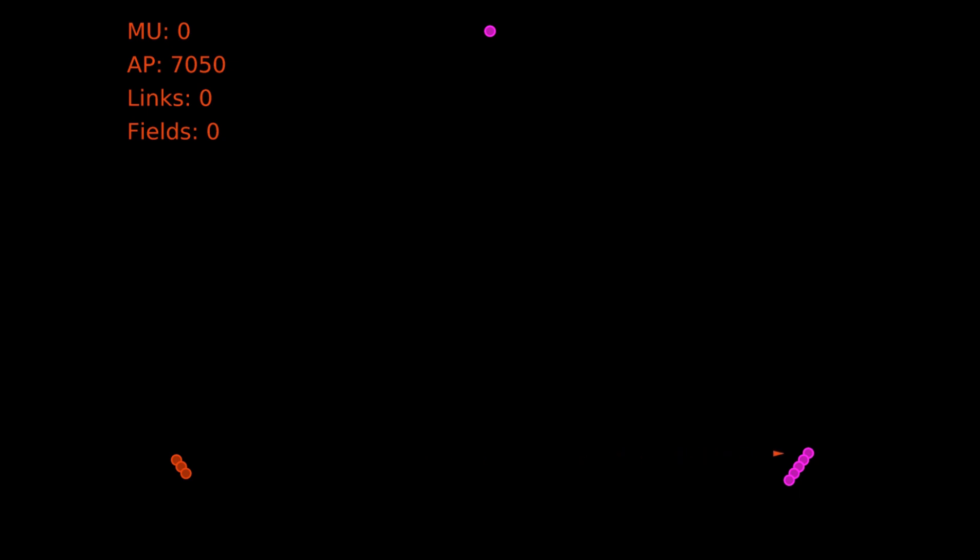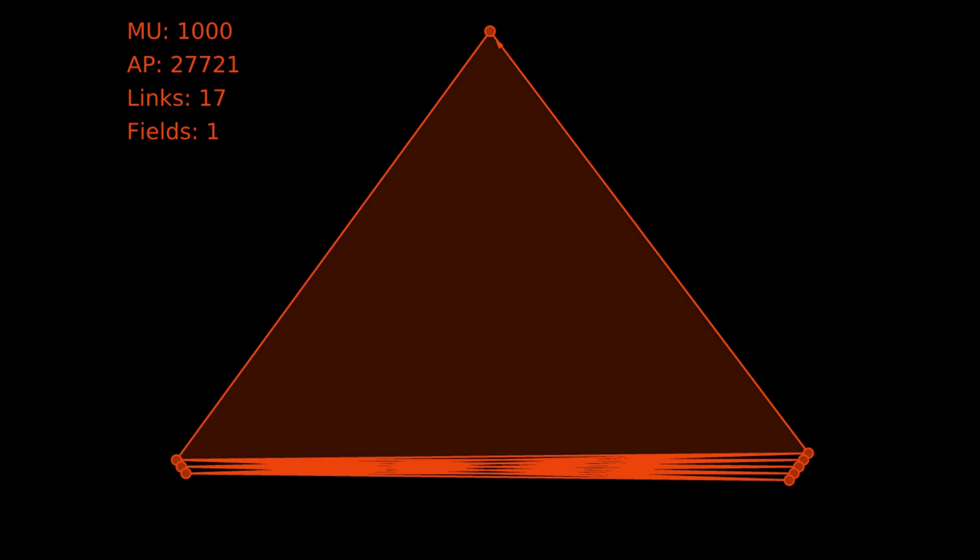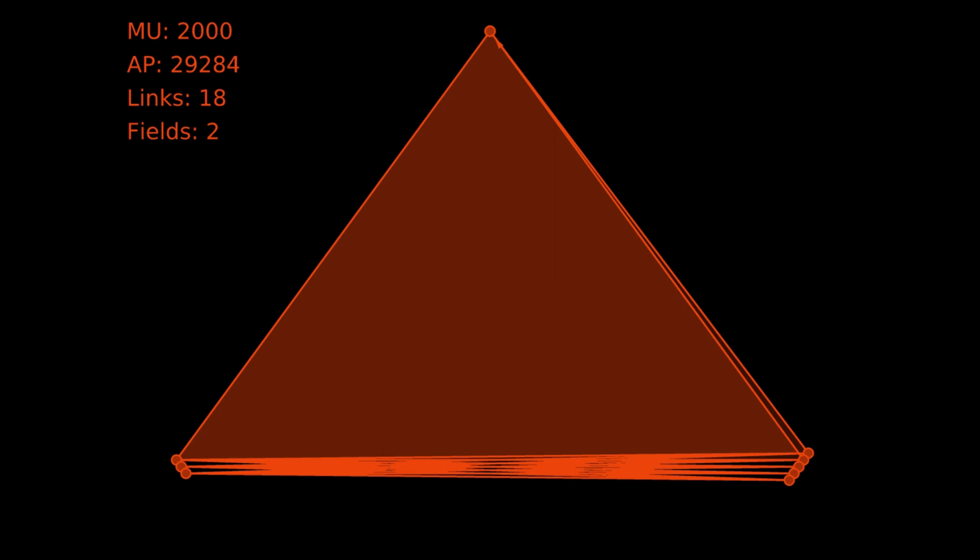We're going to get the cream tangerine agent to come and try to link them up to make a whole bunch of fields. First, they capture all the portals and link them all together. That's quite a bit of work already. Then they're going to go to the top portal and start linking to the base portals, one on the right, then one on the left, then one on the right, then one on the left. First they throw a link to the right and then to the left, and that makes a field—no surprises there.